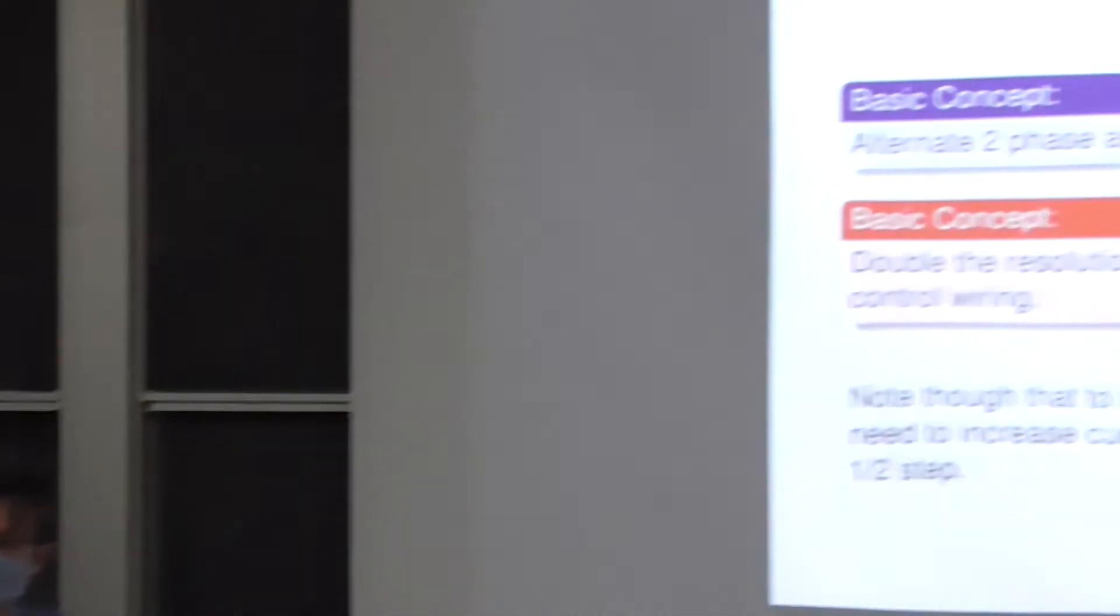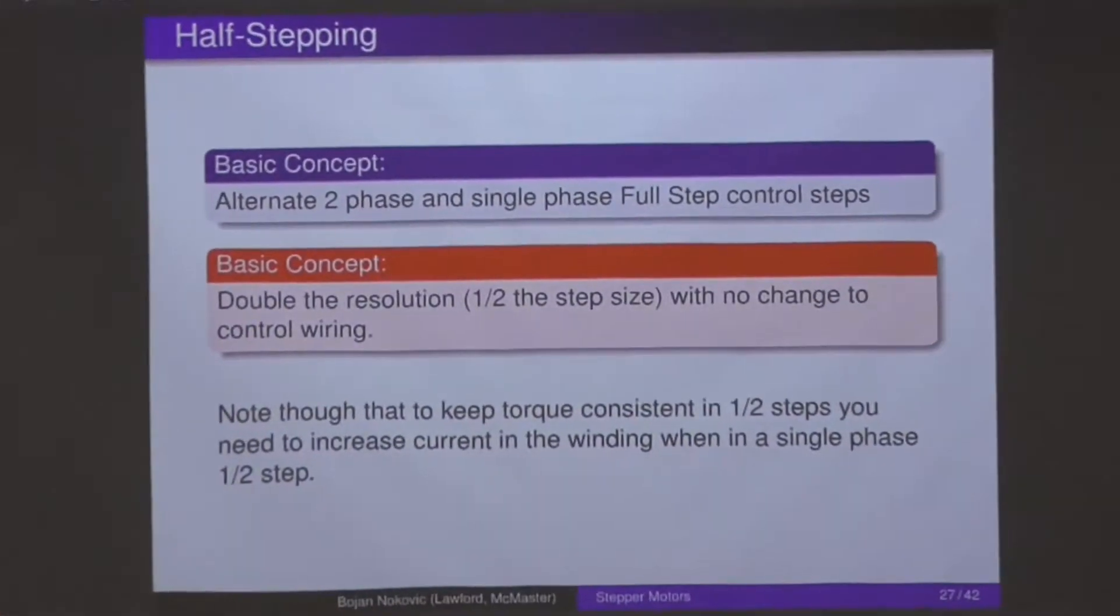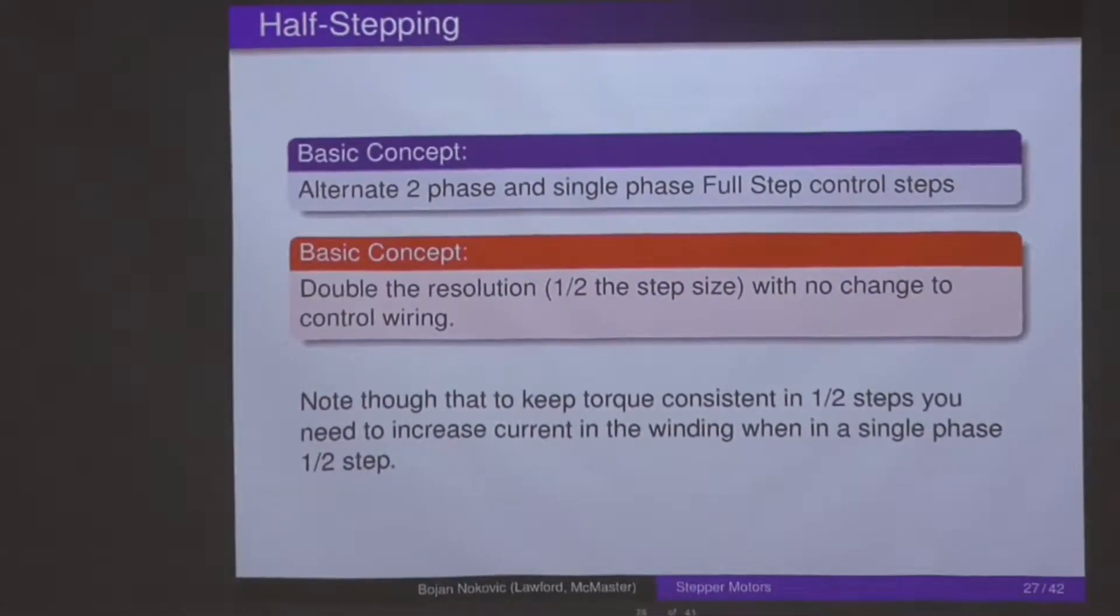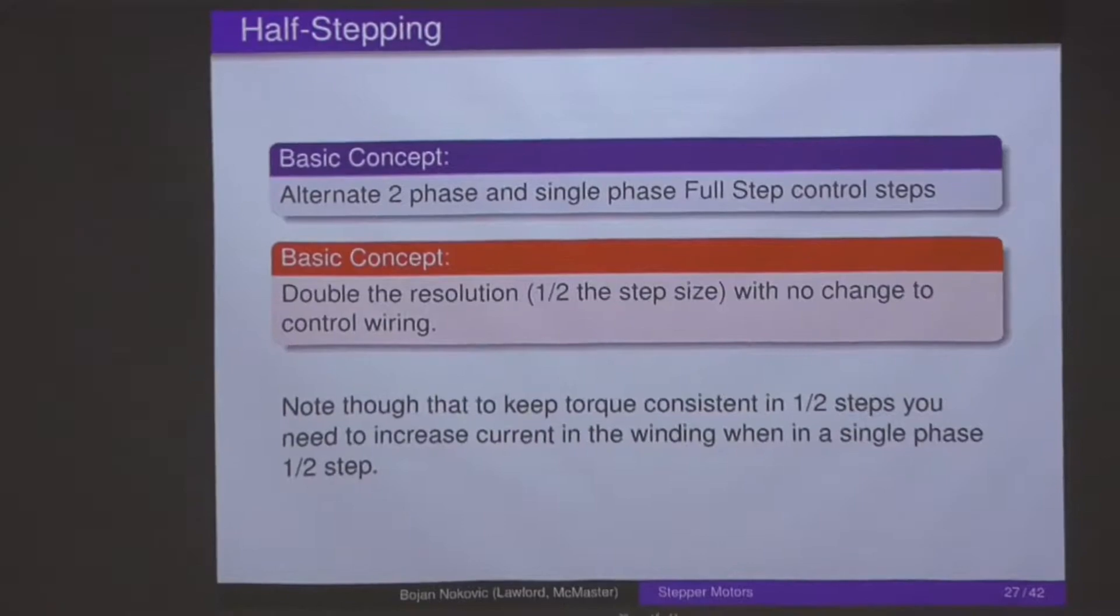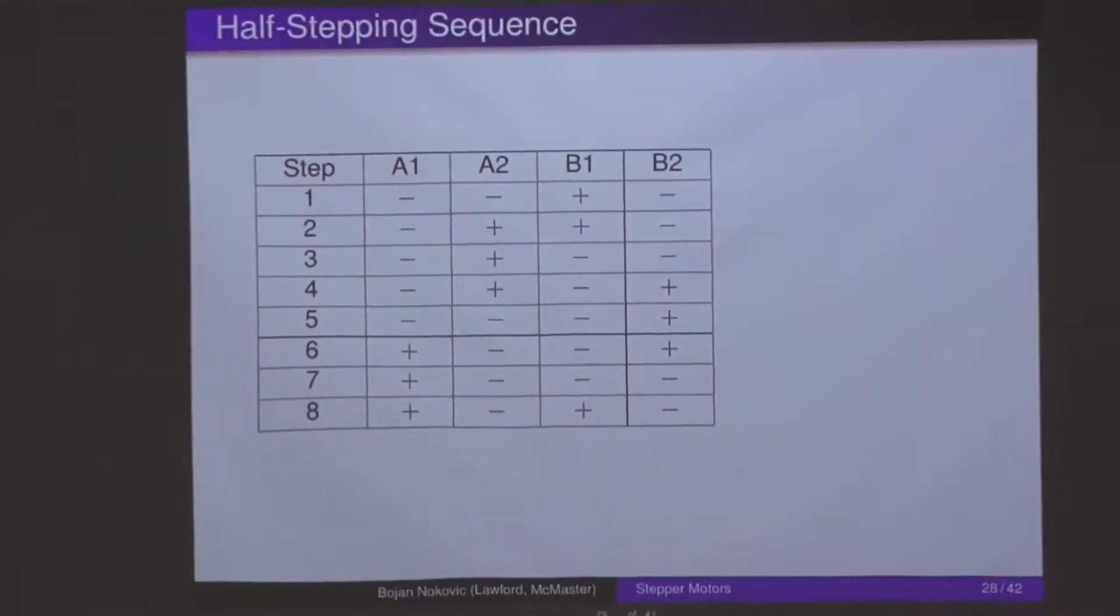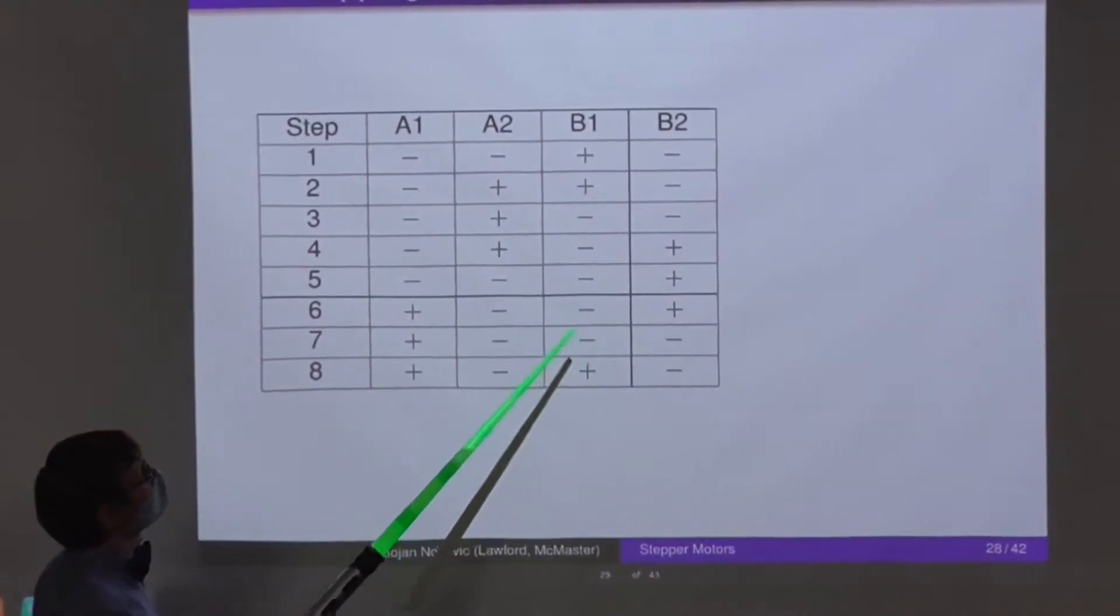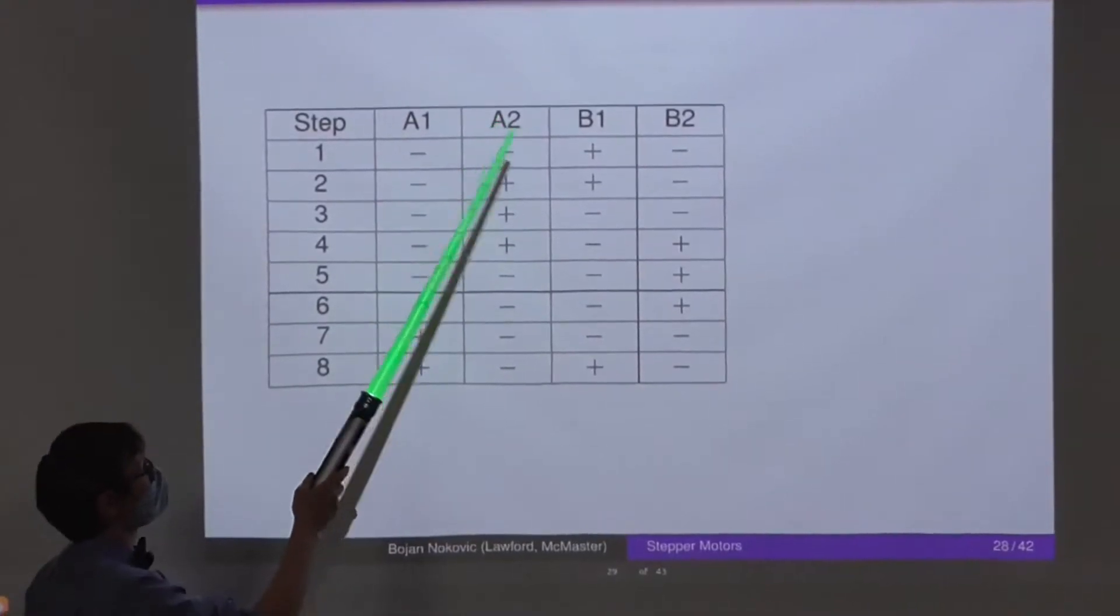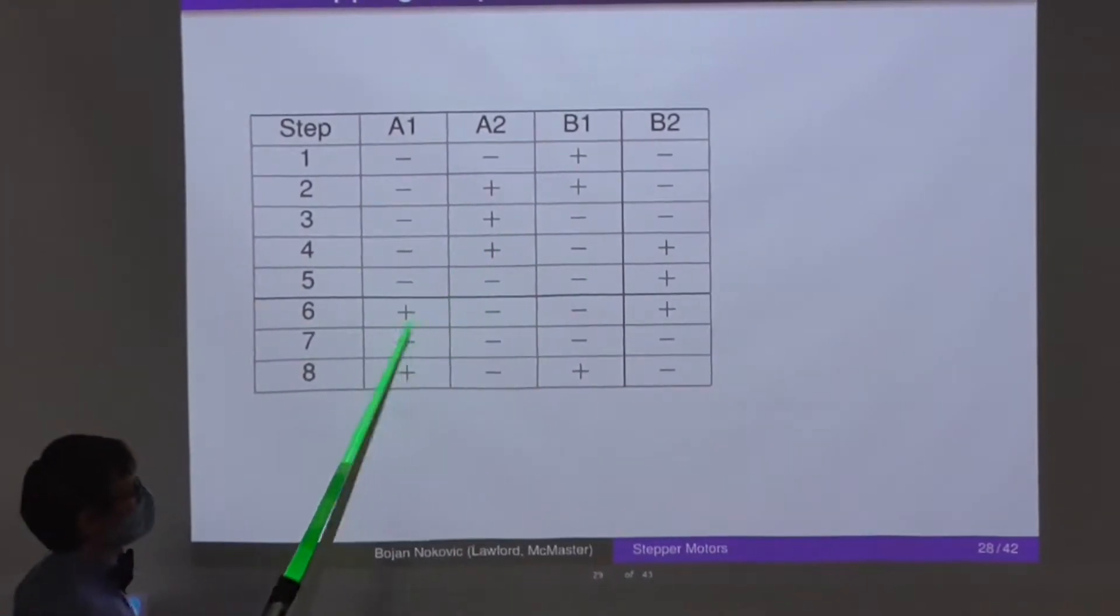Consistent torque isn't a problem if whatever application you're using doesn't require as much torque as is being generated. But once you start getting into those cases where you need more torque than the motor can provide with just a single phase activated, then you start running into problems with half-stepping. So the sequence for half-stepping. You'll notice that we kind of get this zig-zaggy pattern going on. We're alternating having a single pole on and having two on. So in effect, each one of these coils is activated for a continuous three steps. That's the sequence.